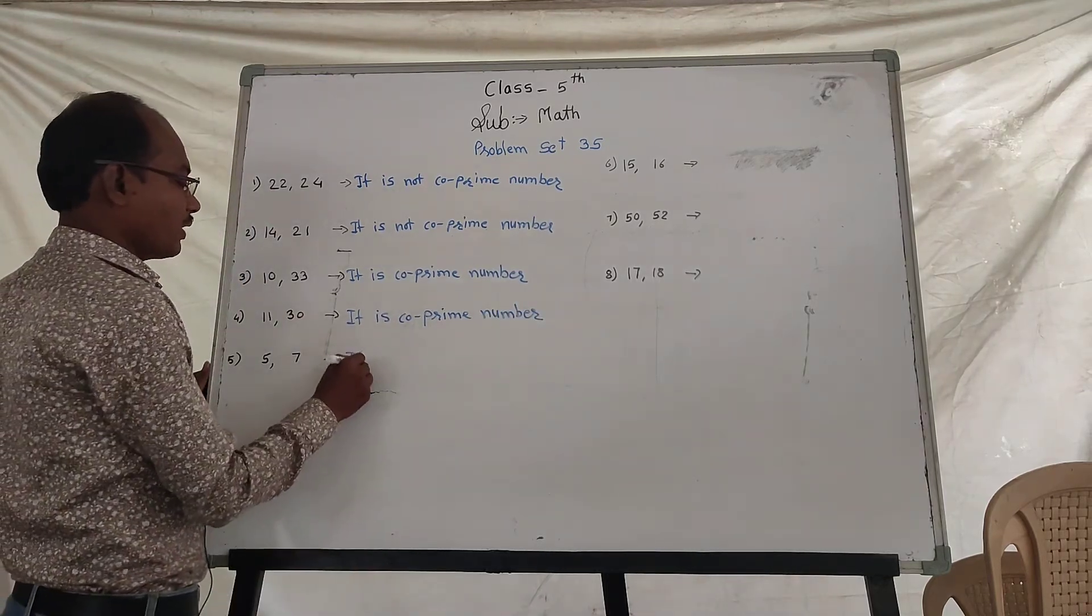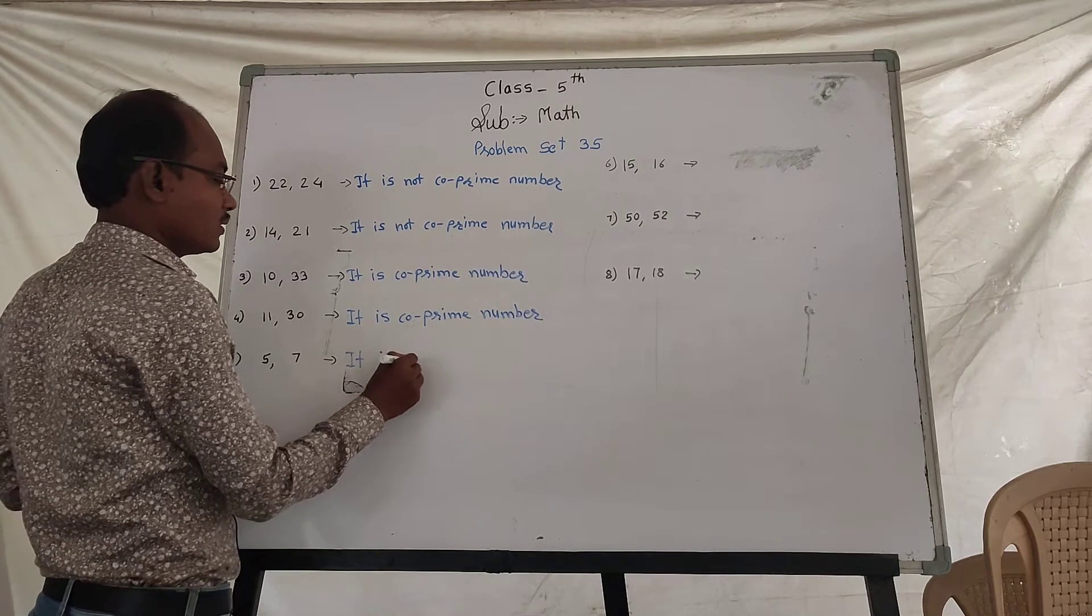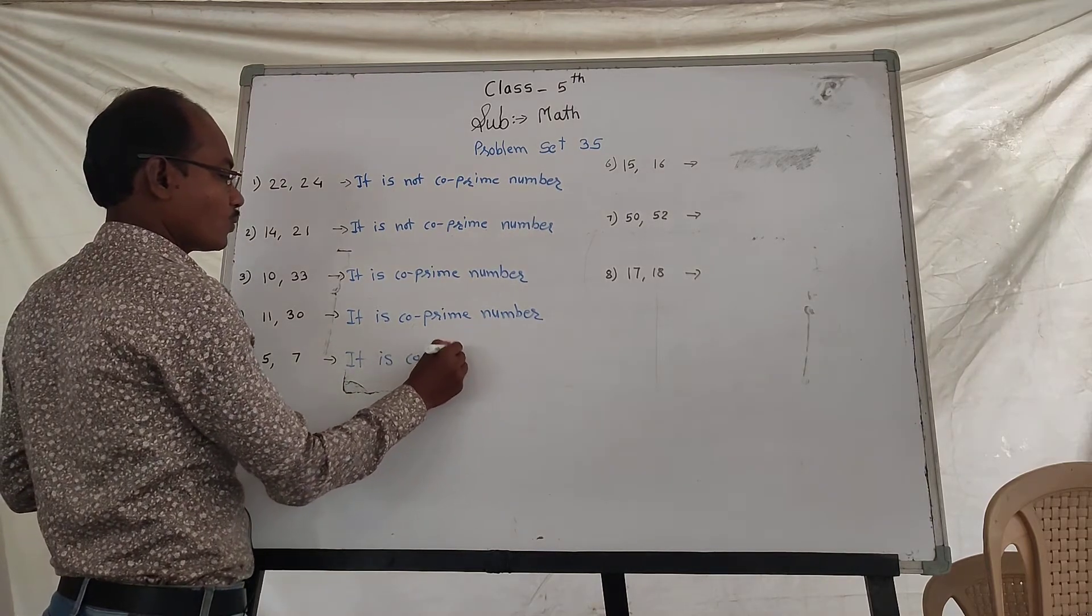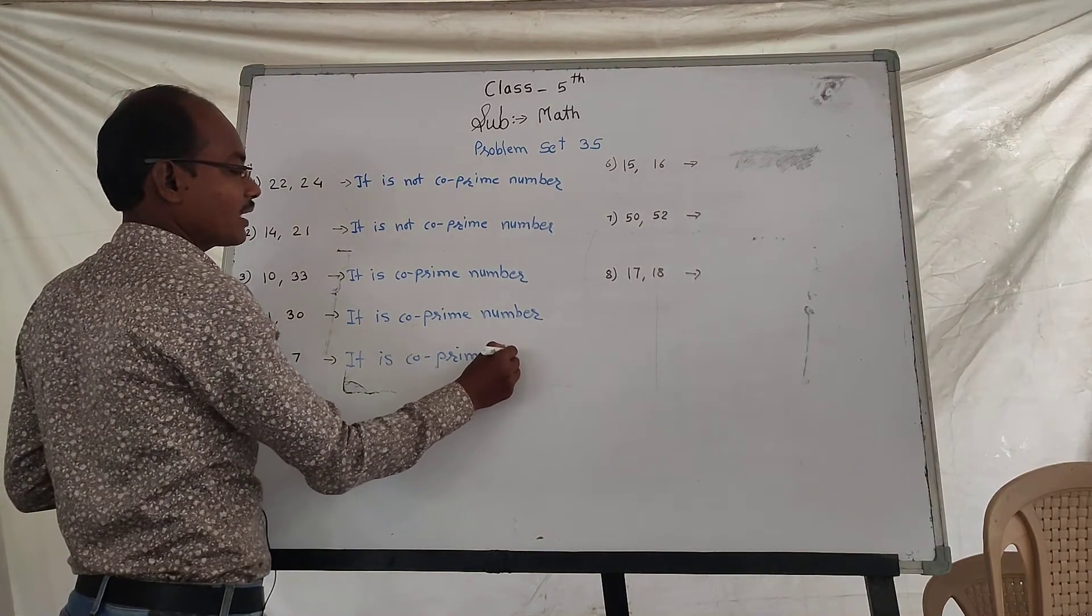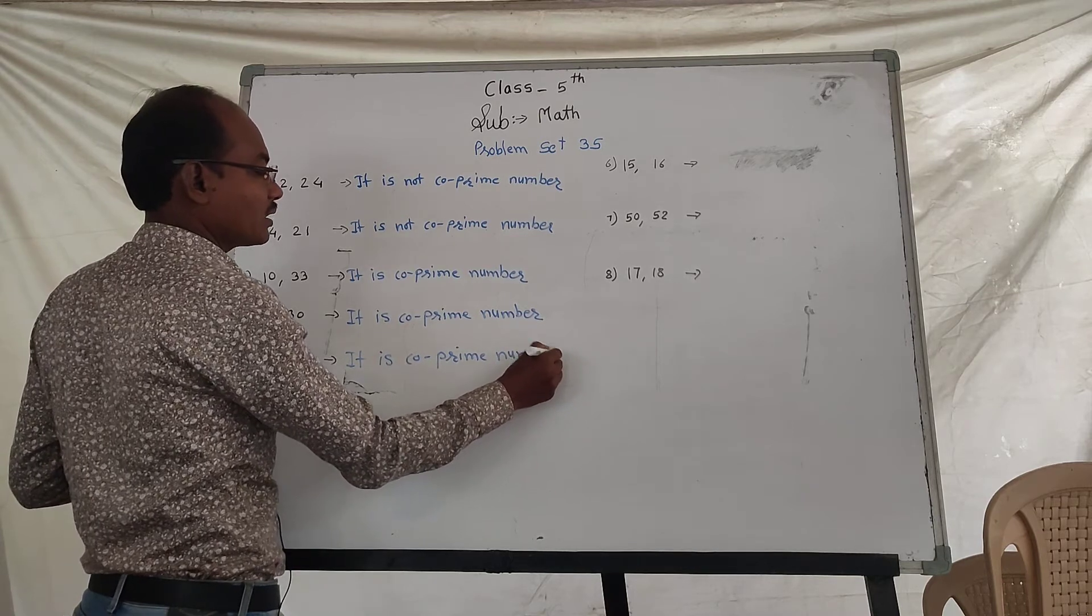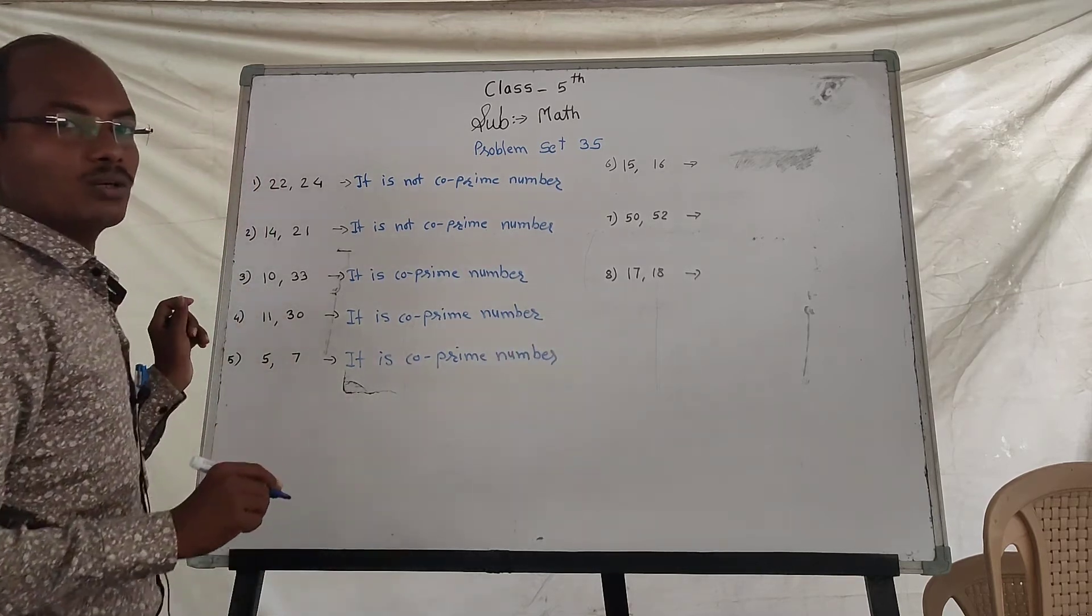5 and 27. They are co-prime numbers. The second one is divided by 9. It is co-prime.